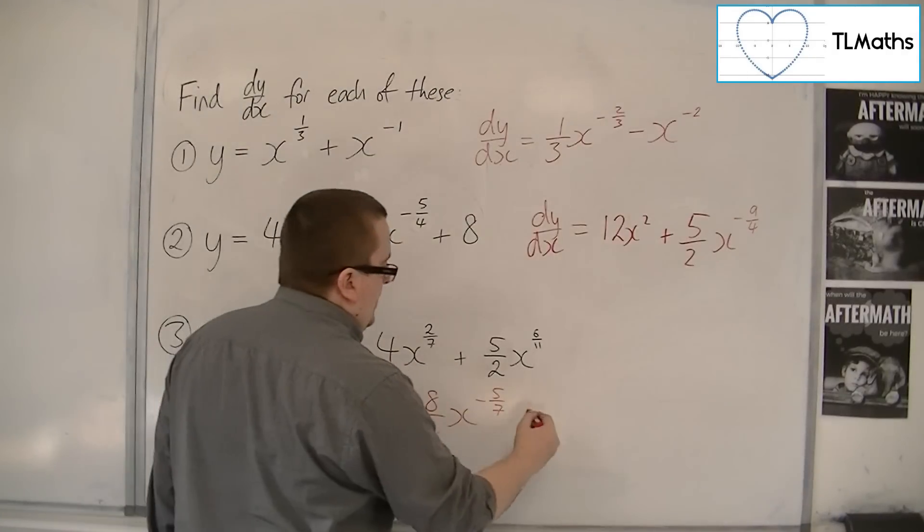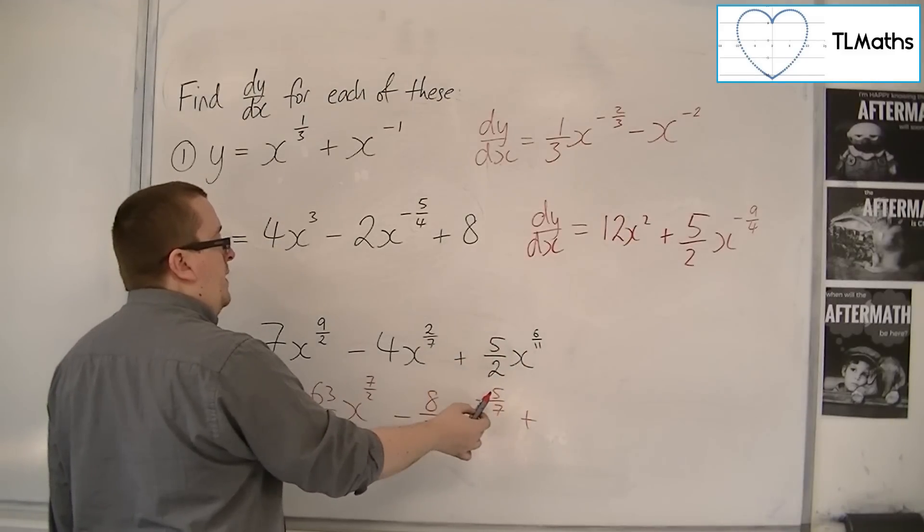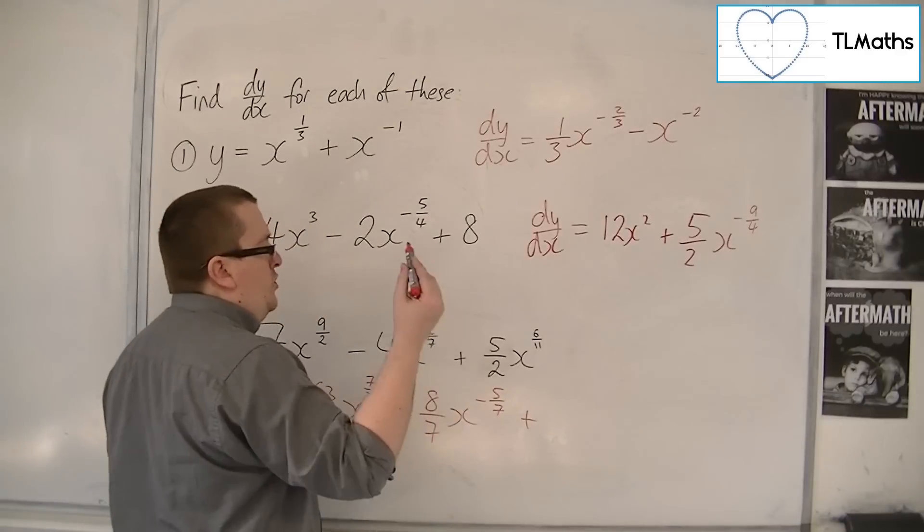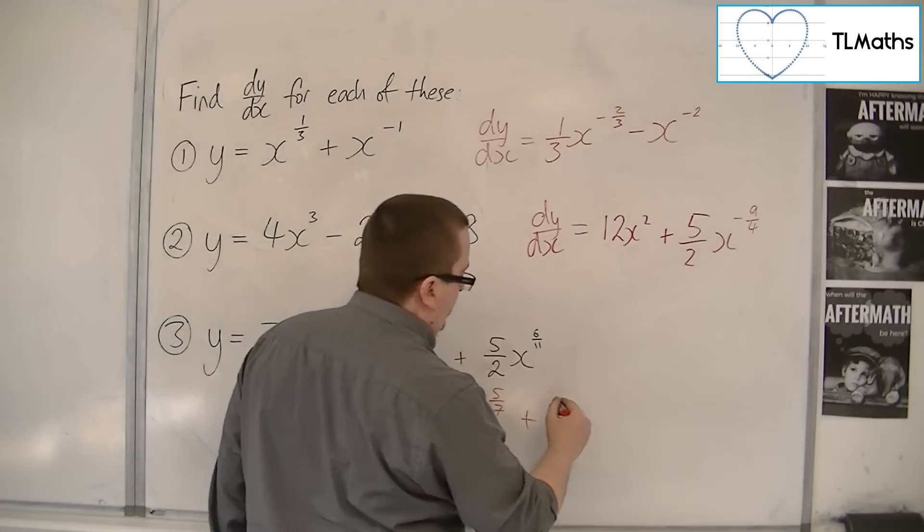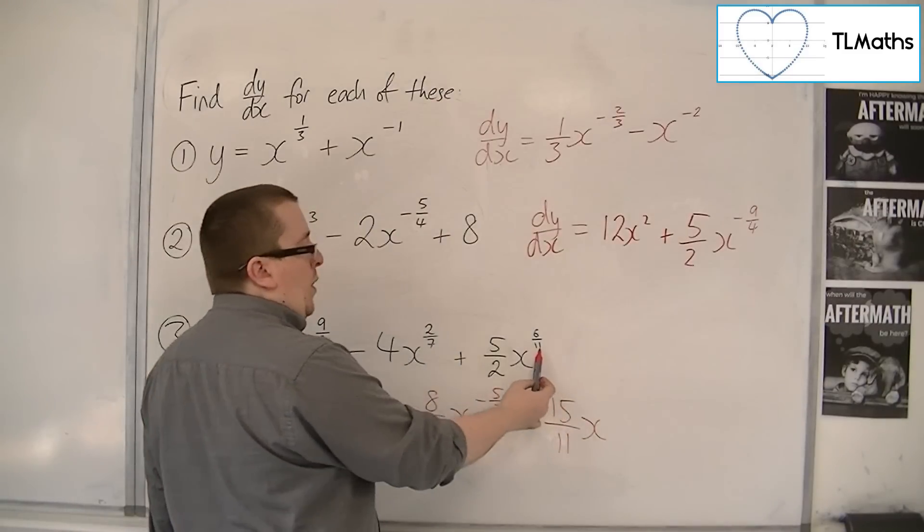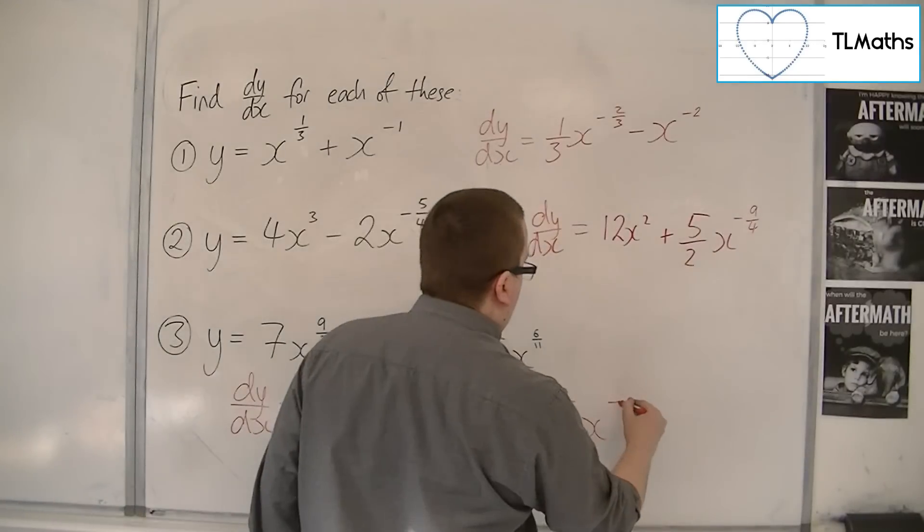And then finally, you've got the six-elevenths coming down and multiplying with the five halves. So you're going to get thirty over twenty-two, which is fifteen-elevenths x. And then take one off the power. Six-elevenths take away one is minus five-elevenths.